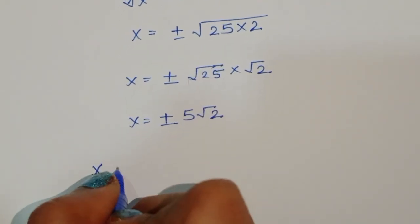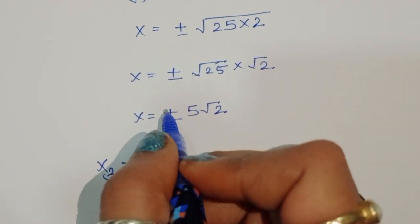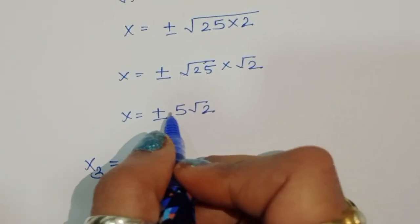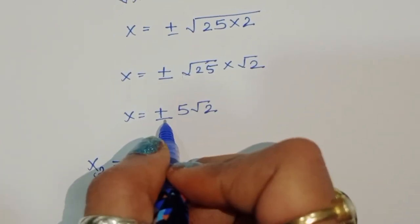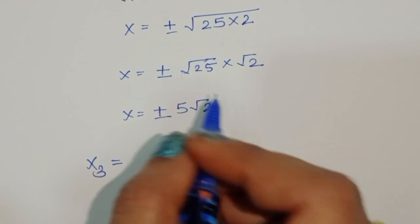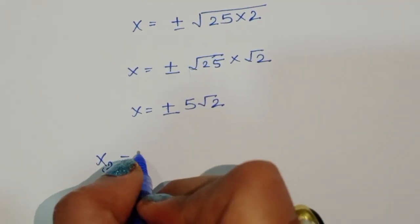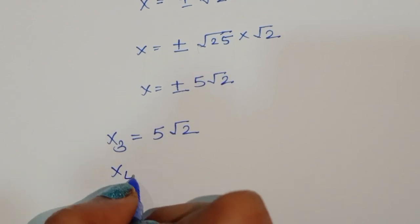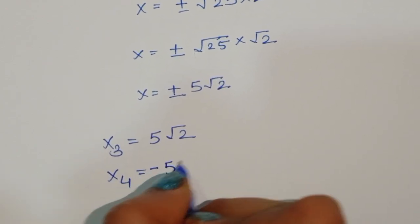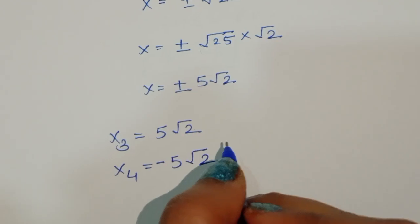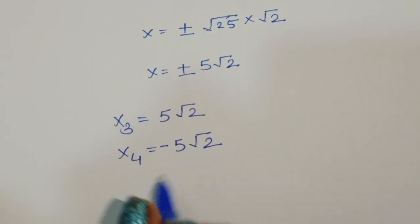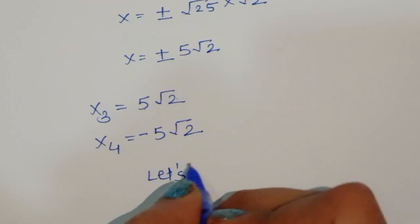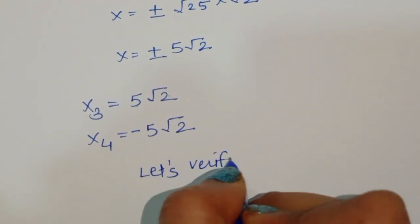We again get two values of x. x₃ equals positive 5√2 and x₄ equals negative 5√2. Now let's verify for the value x equals 5√2, since this is a positive real value.